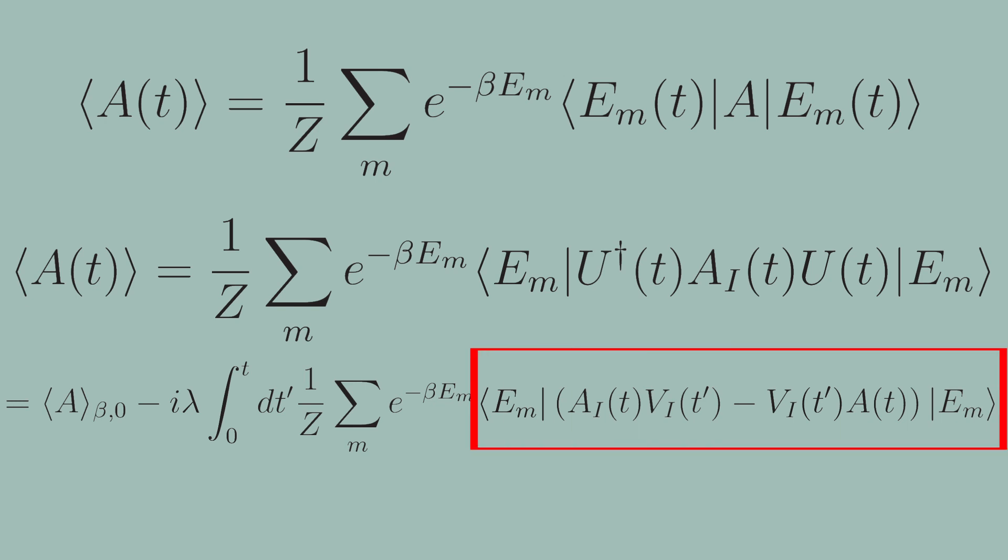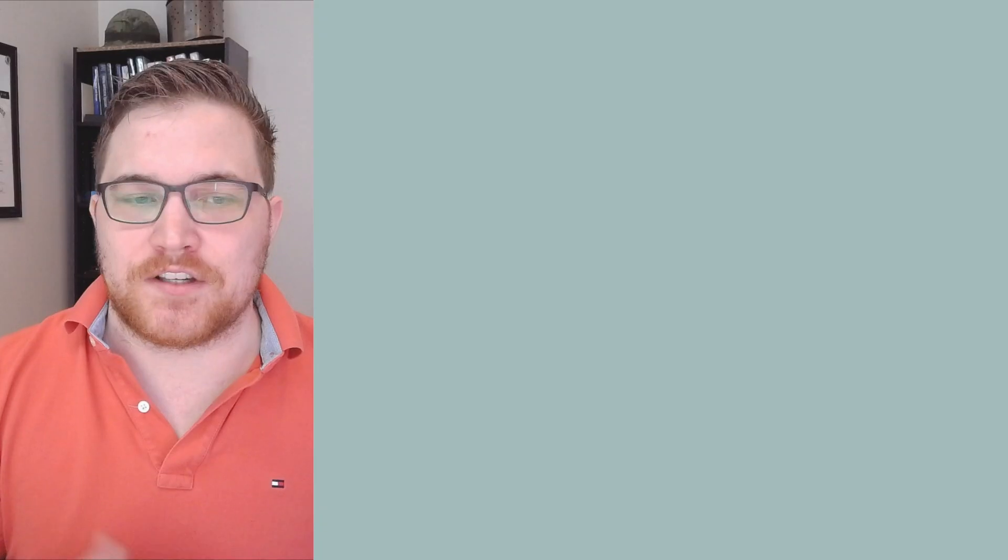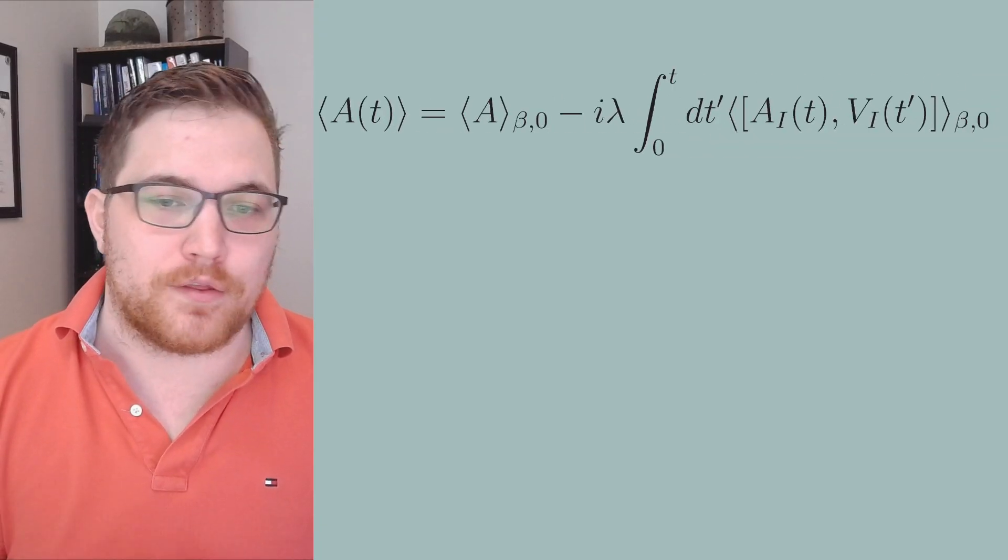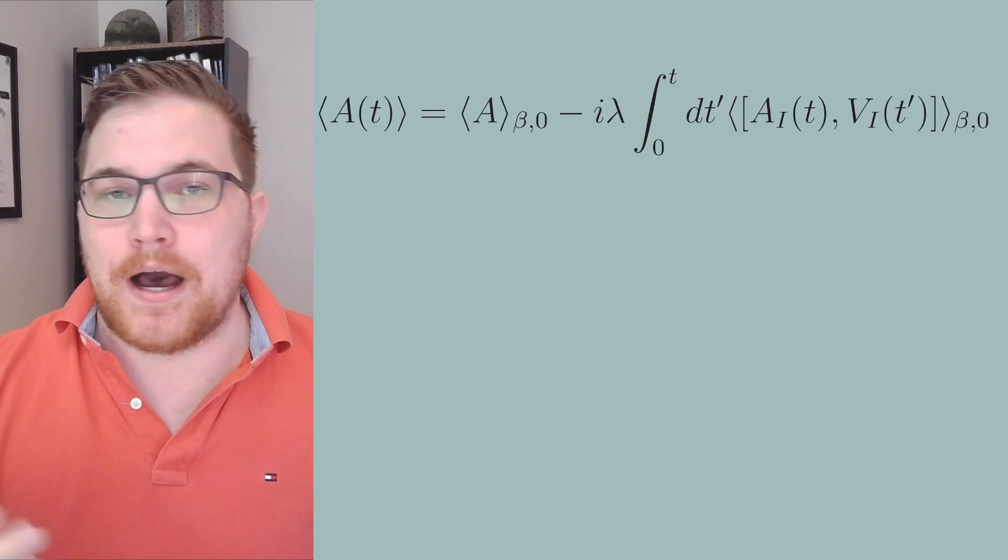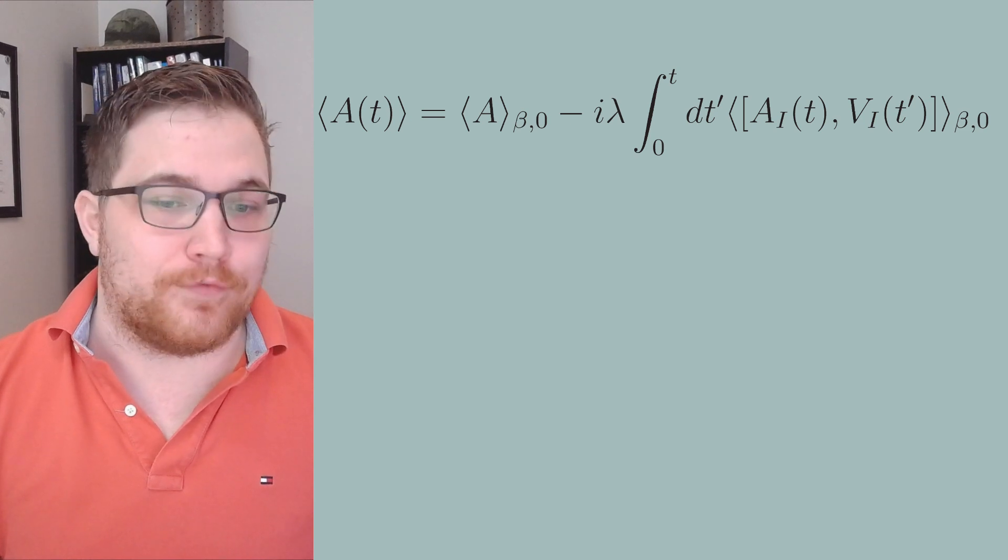the term inside the expectation value is clearly a commutator and we can simply express it as the following thermal expectation value with respect to the free Hamiltonian.